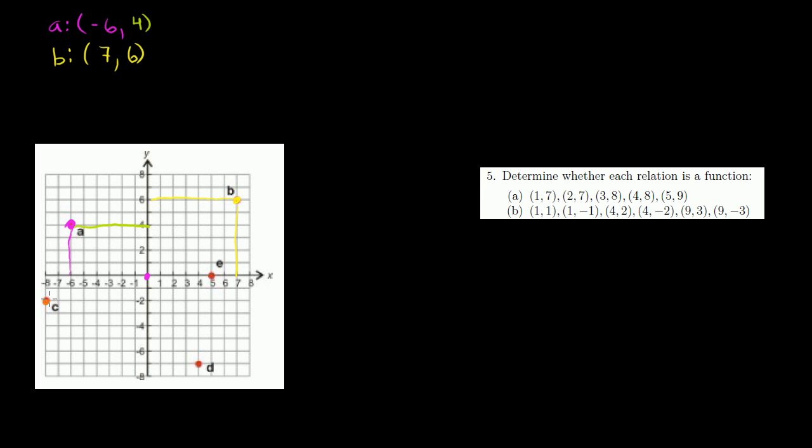Let's do point C. The x-coordinate — you can read that — it's negative 8. It's 8 to the left of the origin, so negative 8. And its y-coordinate, it's 2 below the origin, so its y-coordinate is negative 2. So C is at (-8, -2).